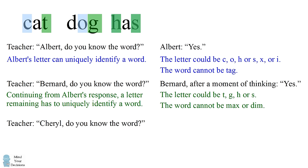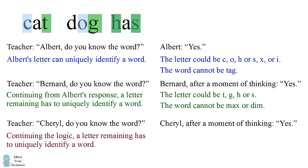Now Cheryl, who has heard all of these, is then asked if she knows the word. She looks at her letter and thinks about what Albert and Bernard had said and also says yes, I can figure out what the word is. So continuing the logic, one of the remaining letters has to uniquely identify the word. Well, there are only two letters left. There's a letter A and there's a letter D.